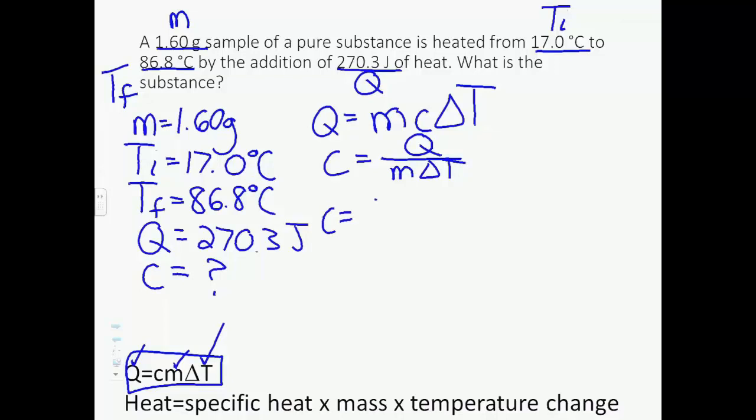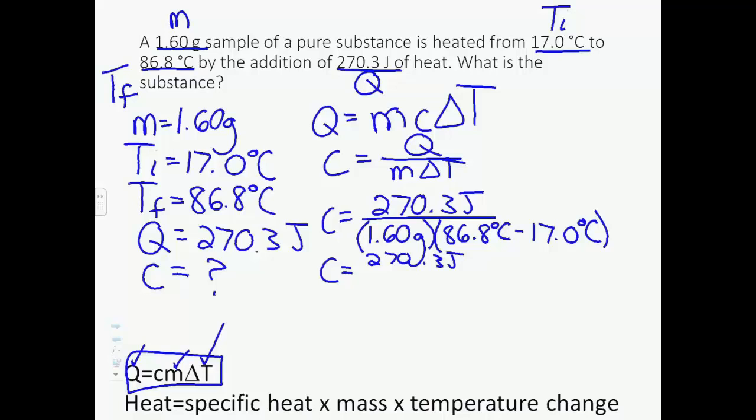C equals 270.3 joules over our mass, which is 1.60 grams, times our delta T, which is 86.8 degrees Celsius minus 17.0 degrees Celsius. Let's do this in two steps once again. 270.3 joules, and I'm just doing this so that way we can more readily figure out what our units are for C. Divide 270.3 joules divided by 1.60 grams. Then we've got 86.8 minus 17 gives us 69.8 degrees Celsius.